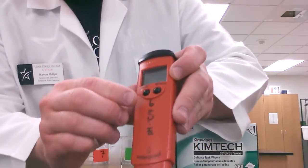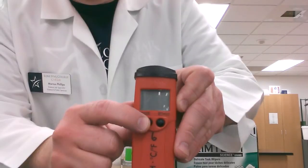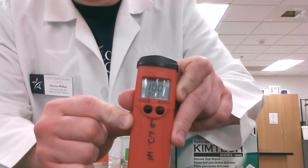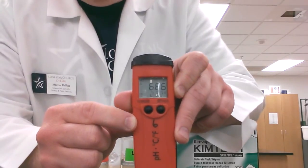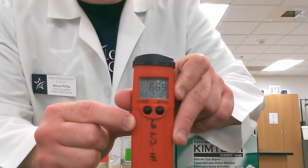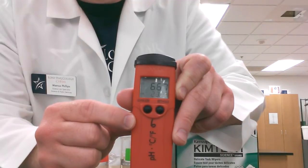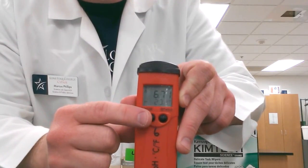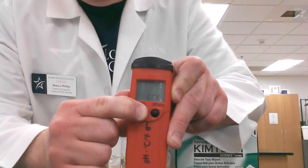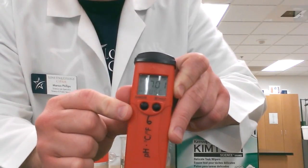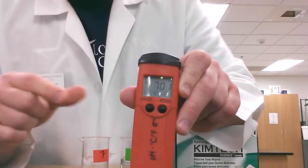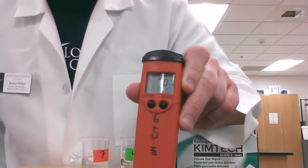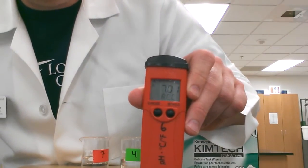We're going to turn on the pH meter by holding the on button for a full second. Now once that's on, to get to the calibration mode, you're going to push the on button one more time, but this time hold onto that button until you see the word CAL. Once you see that, you're going to see 7.01 and the word buff below it, or the word REC.